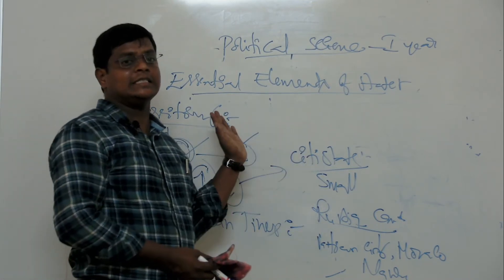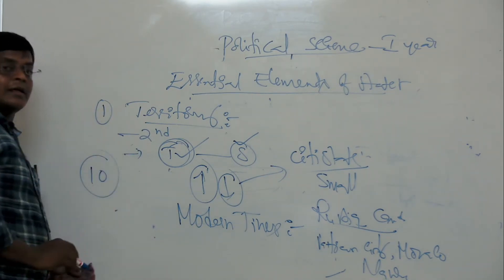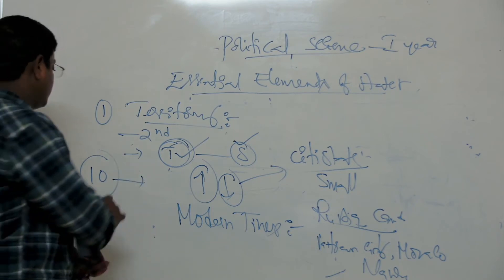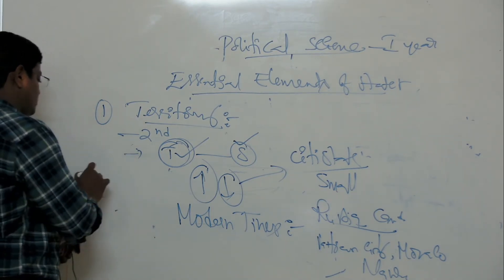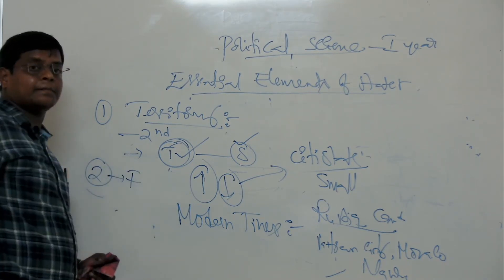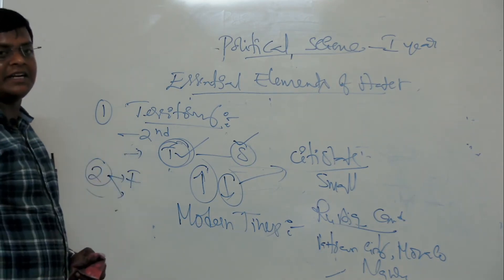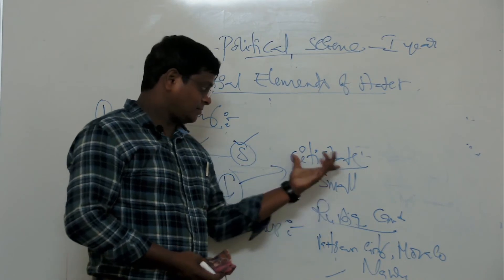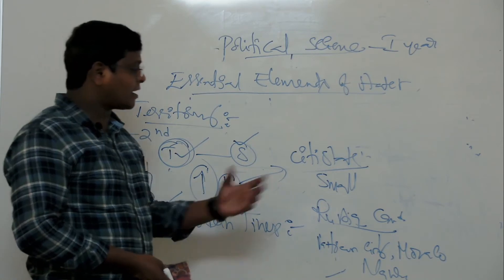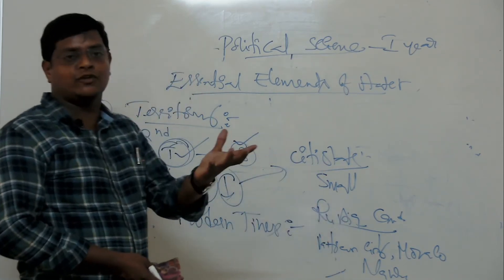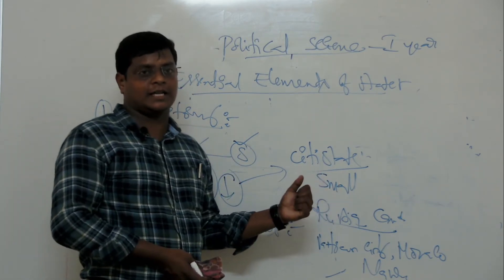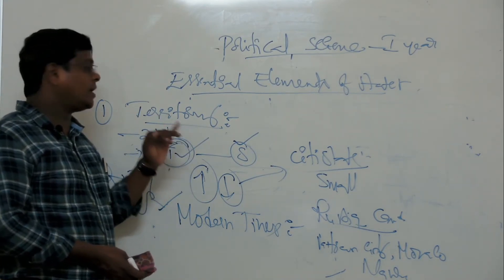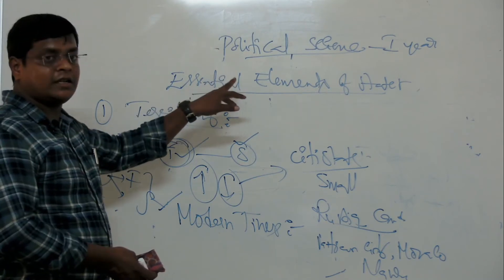The quality of the area is important. For example, if you have 10 acres of infertile, uncultivable land, it is not useful. Whereas 2 acres of fertile, cultivated land is useful. The country which has rich natural resources can use those resources for development; otherwise there is no development. That is why the territory should have rich natural resources. This is the second essential element of the state: Territory.